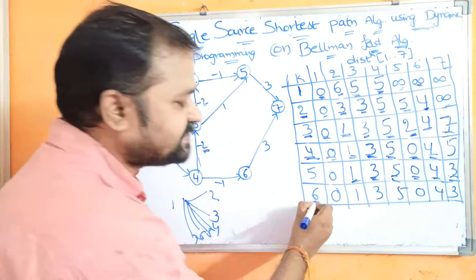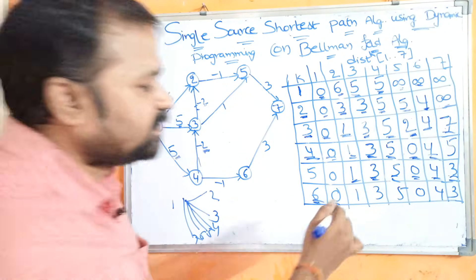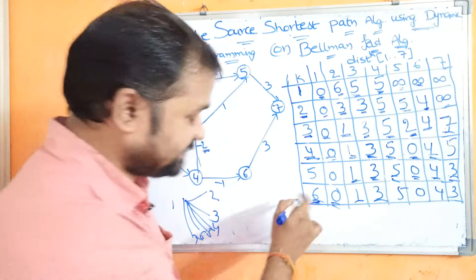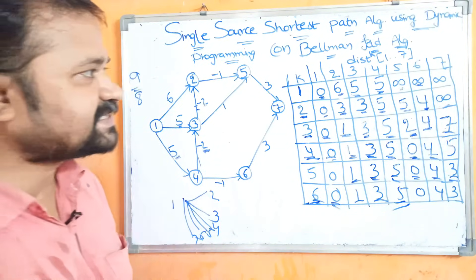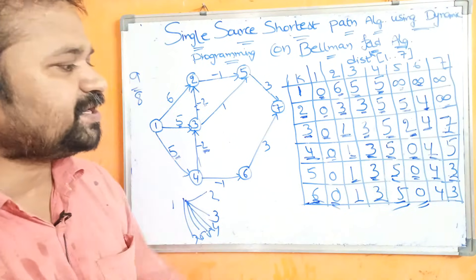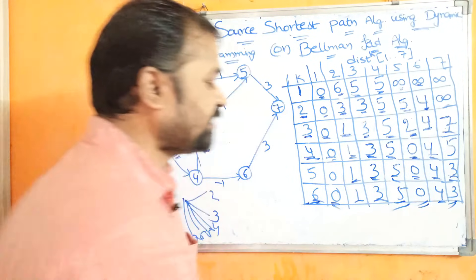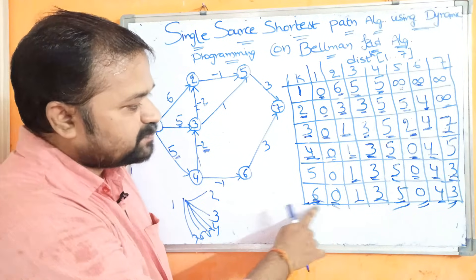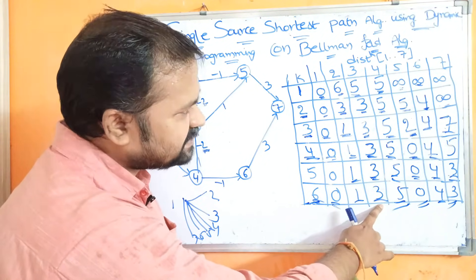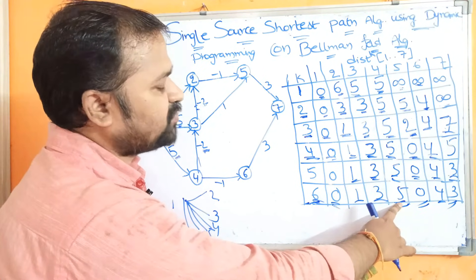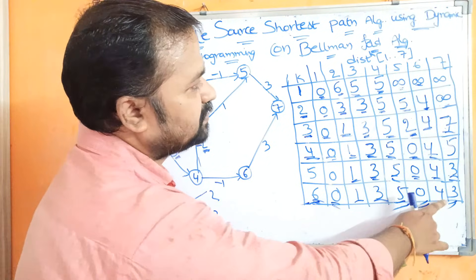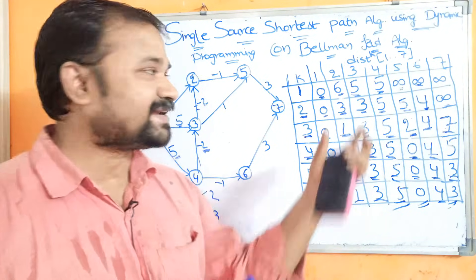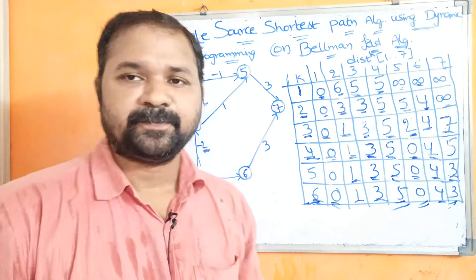For K equals 6: from 1 to 1 cost is 0. For vertices 2, 3, and 4 we cannot go with 6 edges. For vertex 5 the minimum value stays 0. For vertices 6 and 7 we cannot improve. So the final solution is: cost from 1 to 1 is 0, minimum cost from 1 to 2 is 1, from 1 to 3 is 3, from 1 to 4 is 5, from 1 to 5 is 0, from 1 to 6 is 4, and from 1 to 7 is 3. In this way we can solve the problem using dynamic programming with the Bellman-Ford algorithm.